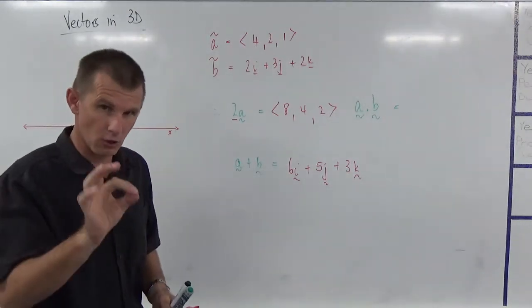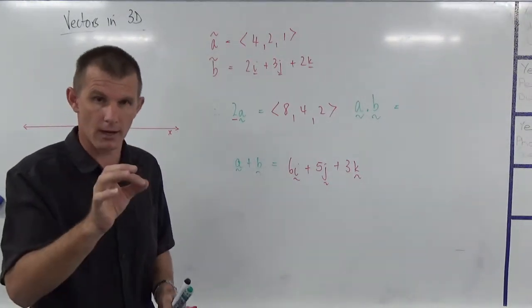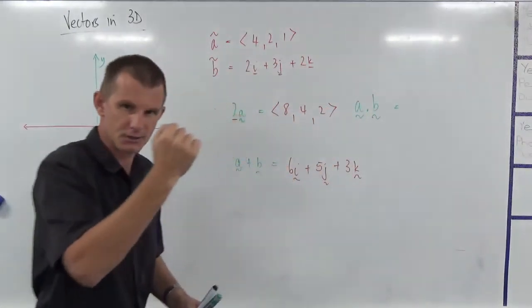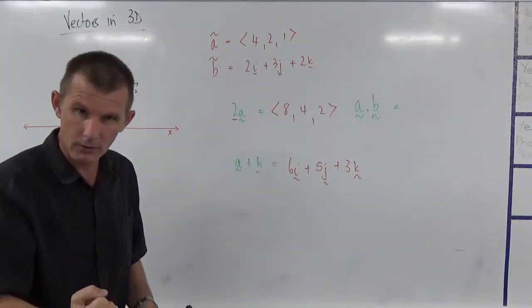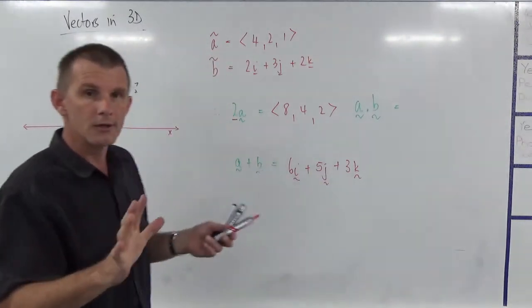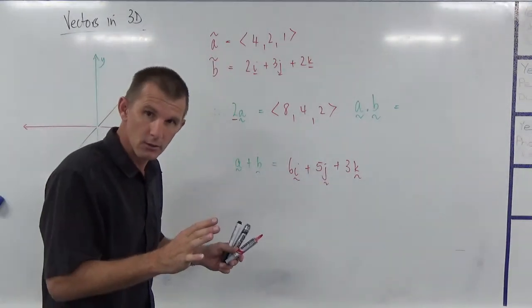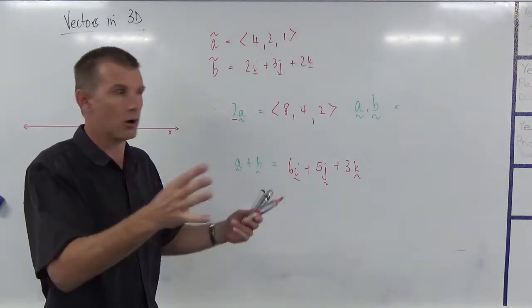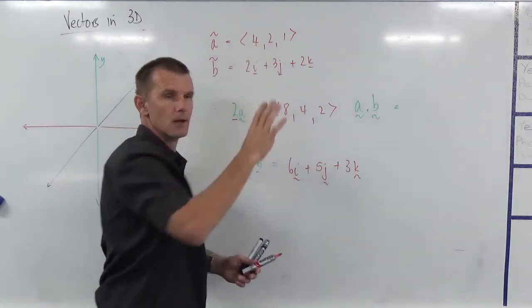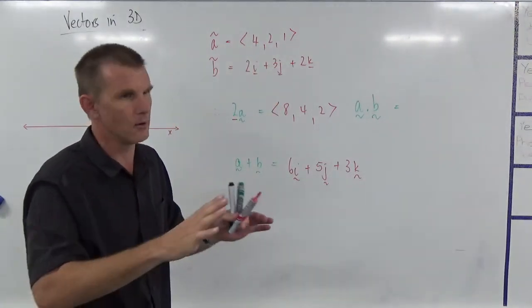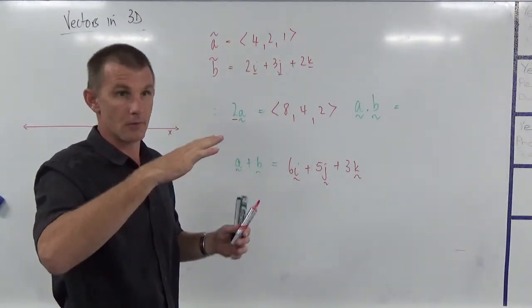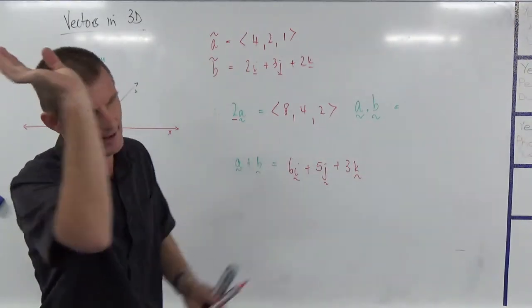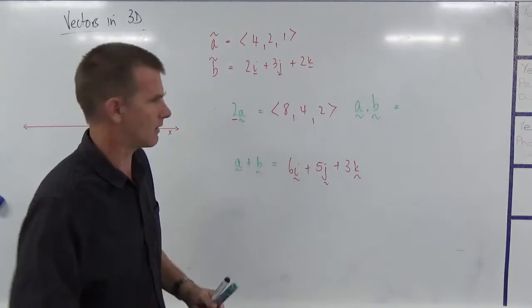Now remember, a dot b is the dot product. Now the dot product, remember, gives us a scalar answer. We will this year, I'll do it in a later video, we do cross product, which the cross product is a vector product of two vectors. Now that's really important when we're looking for the plane that contains two particular planes. We'll get to that later. Lots of fun stuff up that way.